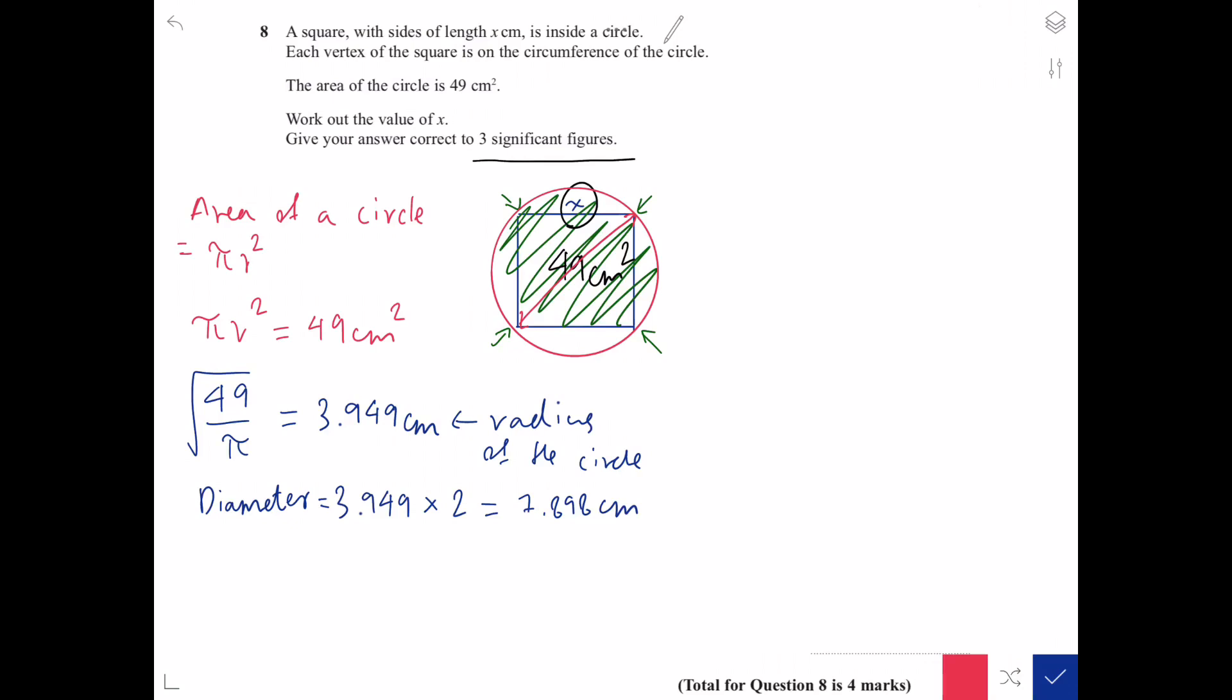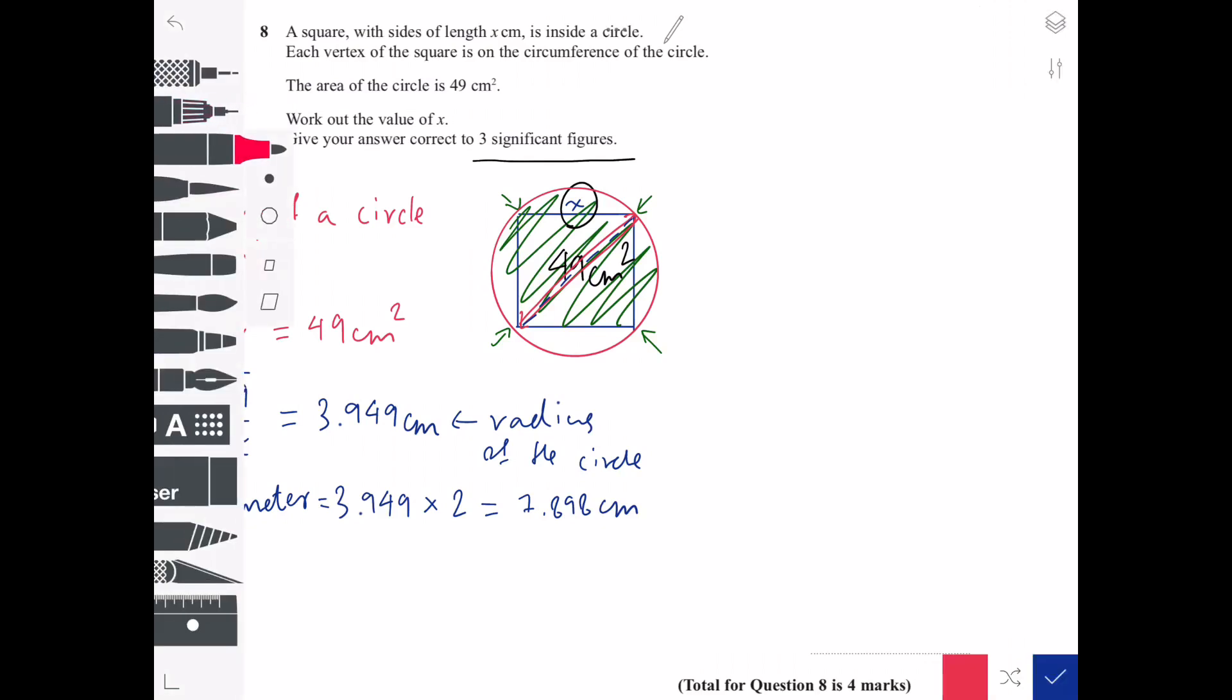As I mentioned earlier, the diameter of the circle is the same as the diagonal length of the square. We also know that if we have a square with a diagonal line, I will get two identical right angled triangles. So to find x I have to use the Pythagoras theorem.